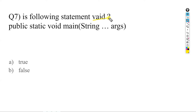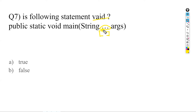Next question: is the following statement valid? — 'public static void main(String... args)'. Normally we use square brackets, but can we replace them with three dots (ellipses)? These three dots are called ellipses and can be used in place of square brackets, so the answer is true — this way of writing the main method is valid.